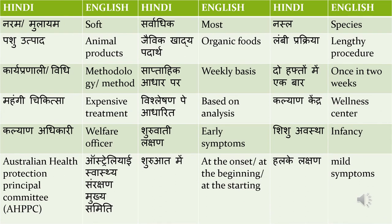'Naram aur mulayam' means soft. 'Sarvaadik' means most or highest — you can translate it as either. 'Nasil' means species. 'Pashu utpaad' means animal products — 'pashu' means animal and 'utpaad' means products. 'Jayvik khadhyapadar' means organic foods — always remember that organic is 'jayvik'. 'Lambi prakriya' means long procedure. 'Vidhi' means method, and 'karyapranali' means methodology. 'Saaptahik adhar par' means on a weekly basis — 'adhar' means basis.